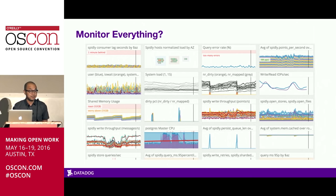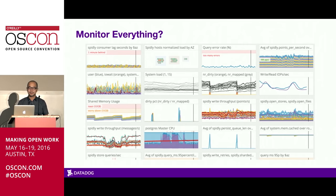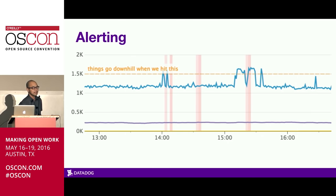The dashboards are great, except you can't have people staring at them 24 hours a day. As your system gets more and more complicated, you're going to collect more metrics, and you'll actually care about more metrics than you can possibly even look at. That's where automated alerting comes in.